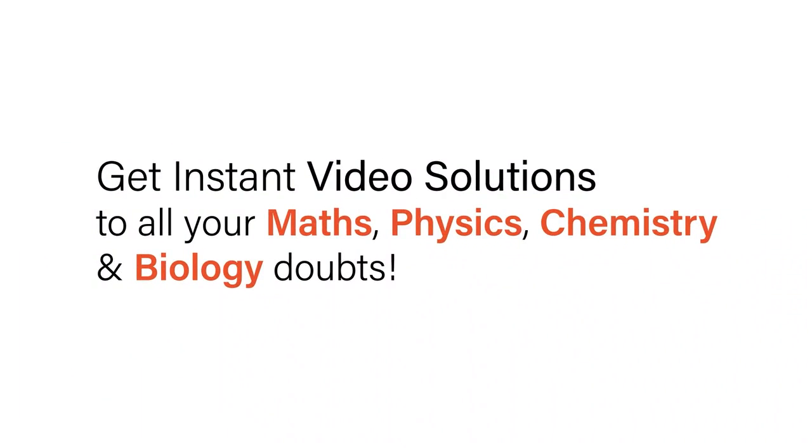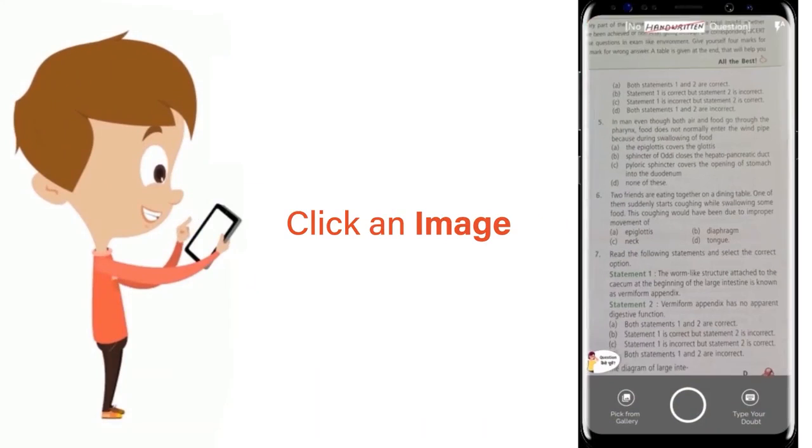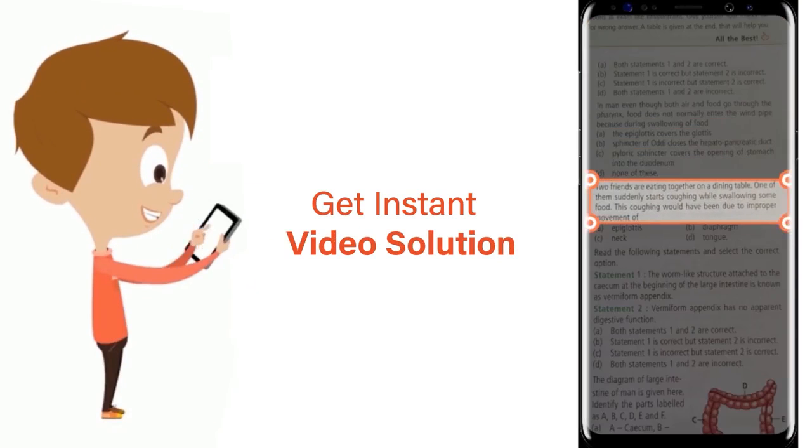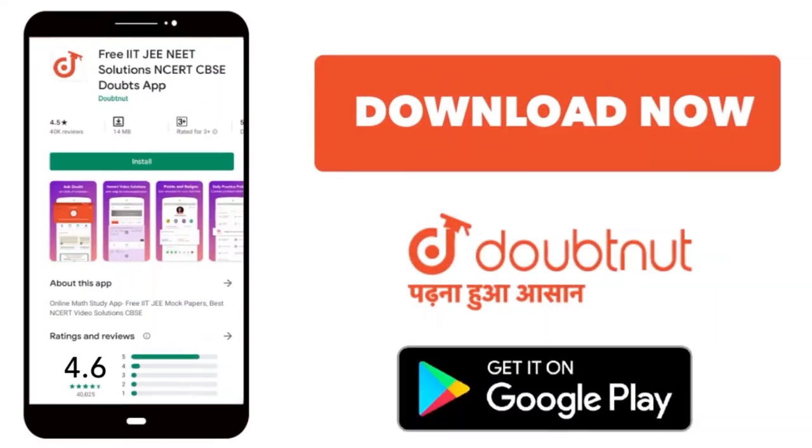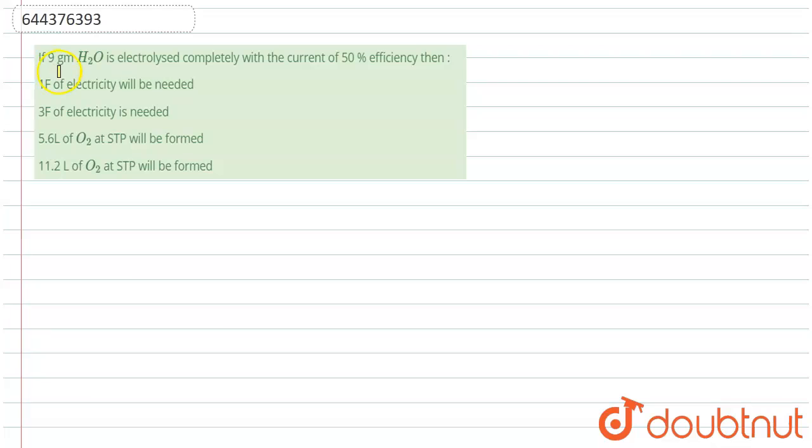With Doubtnut, get instant video solutions to all your maths, physics, chemistry, and biology doubts. Just click the image of the question, crop it, and get an instant video solution. Download Doubtnut app today. Hello guys, in this question it is given: if 9 gram H2O is electrolyzed completely with current of 50% efficiency, then what will be the correct option?